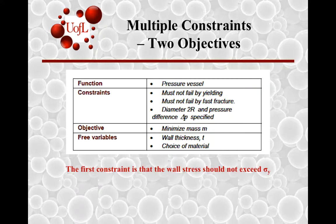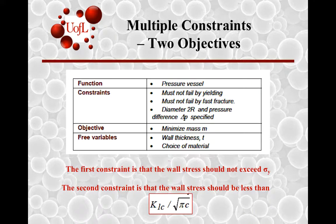The first constraint on the wall stress indicates that the wall stress should not exceed sigma y, the yield stress. The second constraint on the wall stress is that it should be less than K_IC over square root of pi times c, where K_IC is the fracture toughness and c is a flaw or crack that is generated. These are the two constraints that we'll have to work with.